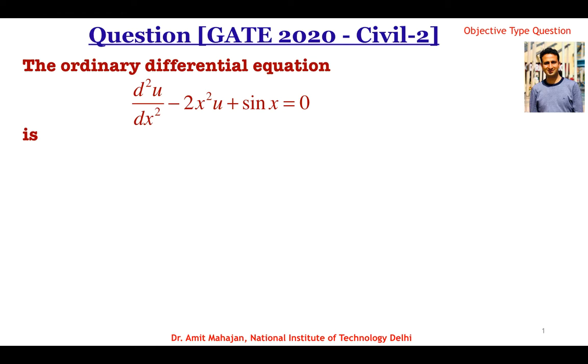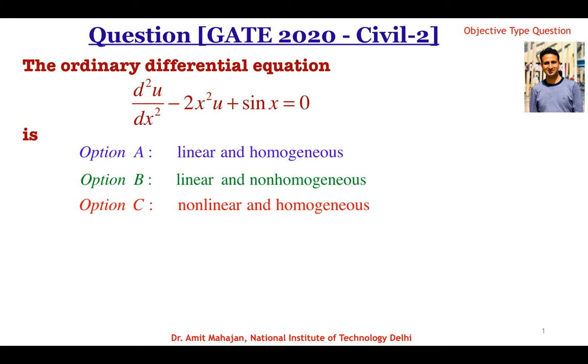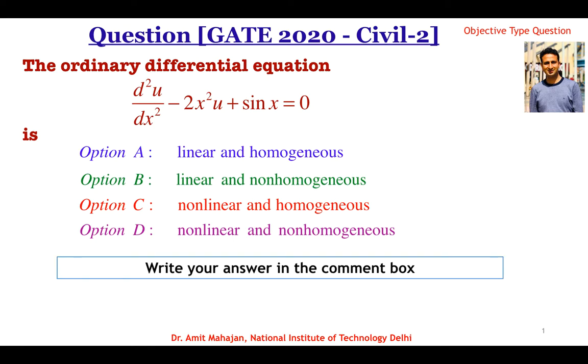The options are: Option A: linear and homogeneous; Option B: linear and non-homogeneous; Option C: non-linear and homogeneous; Option D: non-linear and non-homogeneous. Write your answer in the comment box.